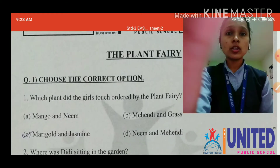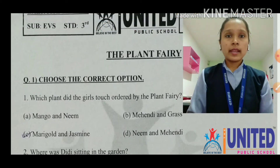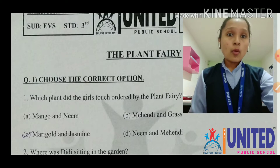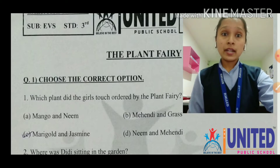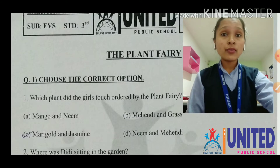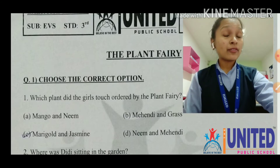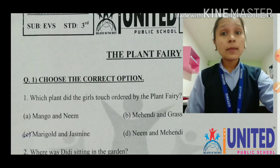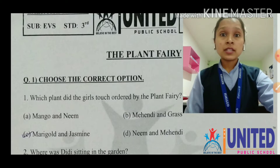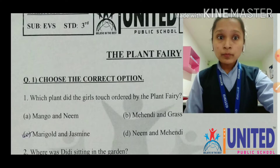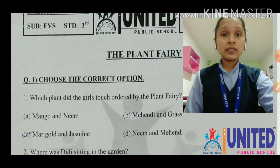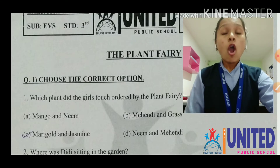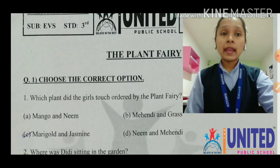Question number 1: choose the correct option. Number 1 is: which plant did the girls touch as ordered by the plant fairy? Option A is mango and neem. Option B, mehendi and grass. Option C, marigold and jasmine. Option D, neem and mehendi.